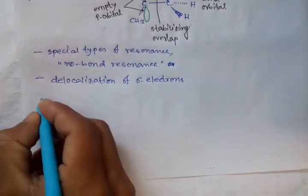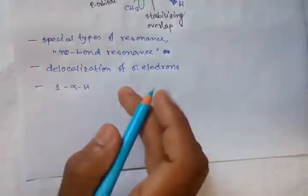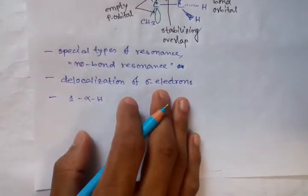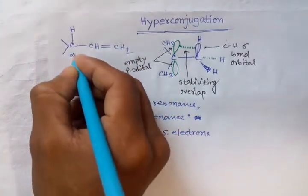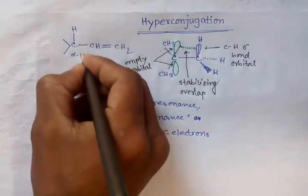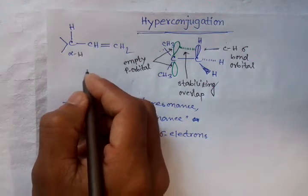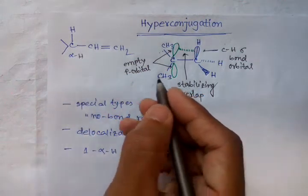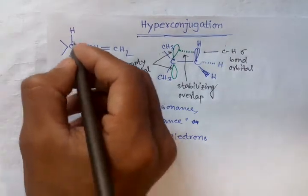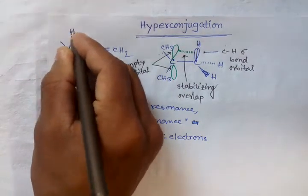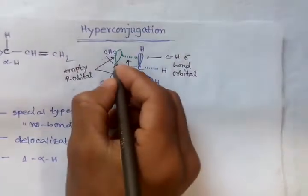When a molecule contains at least one alpha hydrogen with respect to a multiple bond or unshared orbital — here this is the alpha position and it is the alpha hydrogen. So this compound contains one alpha hydrogen, so it can undergo hyperconjugation. The condition for hyperconjugation is that a compound has at least one alpha hydrogen with respect to this double bond or this unshared orbital.